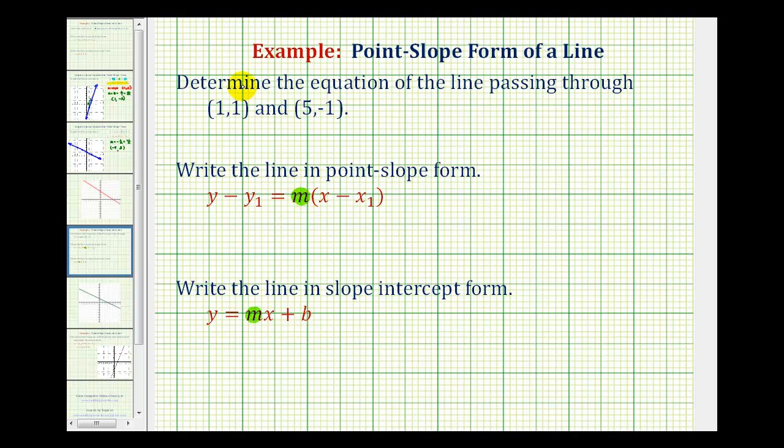And since we're given two points on the line, we can use the formula M equals Y sub 2 minus Y sub 1 divided by X sub 2 minus X sub 1.